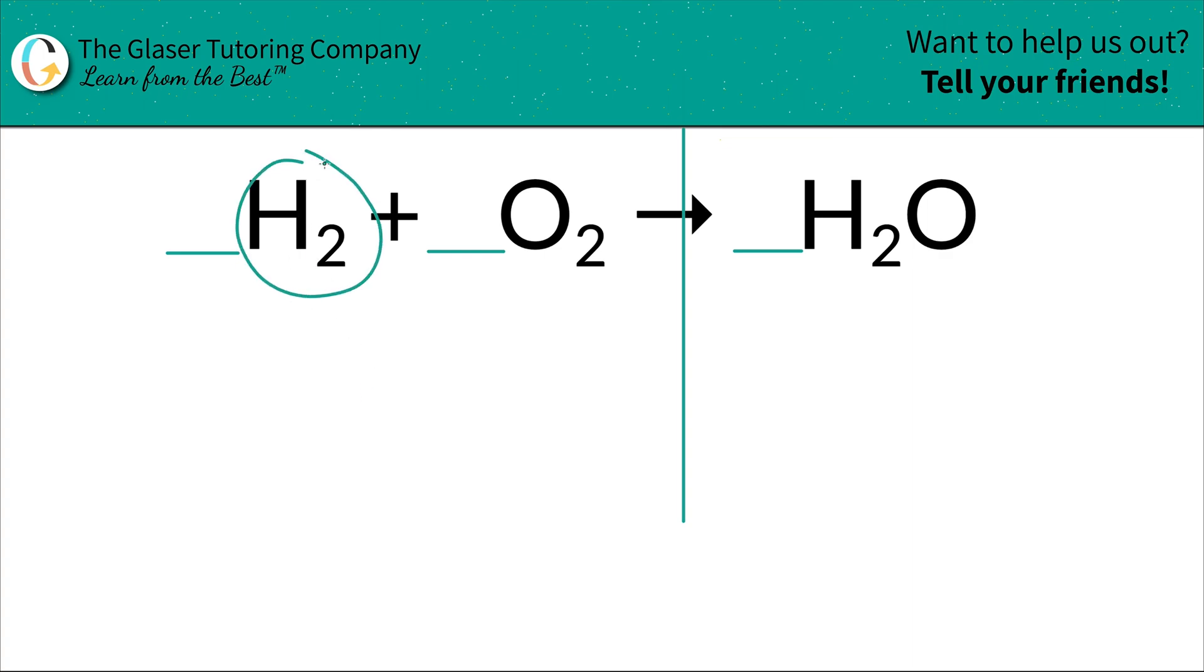All right, so let's start with the hydrogen atom. The subscripts will always tell us how many atoms of each element we have. On the left-hand side, we have two hydrogens, and on the right-hand side, we also have two hydrogens. That two goes with the hydrogen, not the oxygen. So hydrogen's balanced.